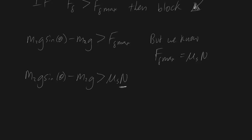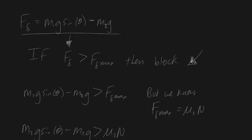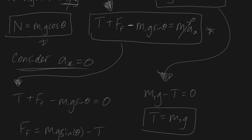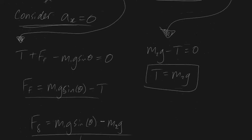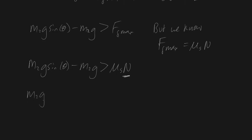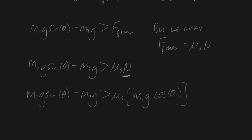Now we need to substitute for N. We showed earlier that N equals m1g cosθ regardless of whether the block is moving. Plugging that in, we get: m1g sinθ minus m2g must be greater than μs × m1g cosθ. This is the inequality that must be true in order for the block to slide down the hill.